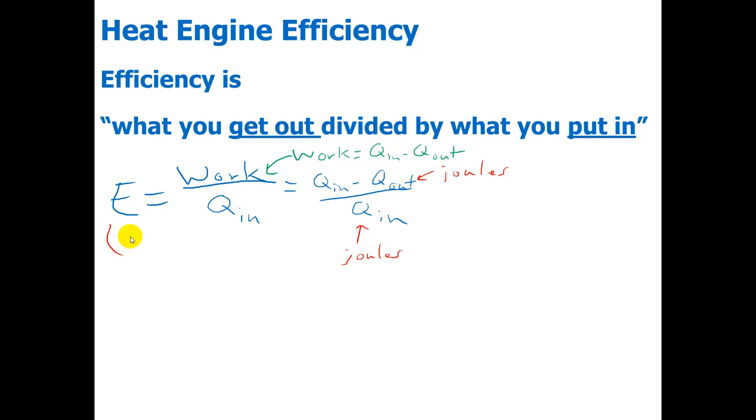And so we could express that ratio as a decimal, like 0.75 would be 75% efficient. But best to convert that percentage or that decimal into a percentage.